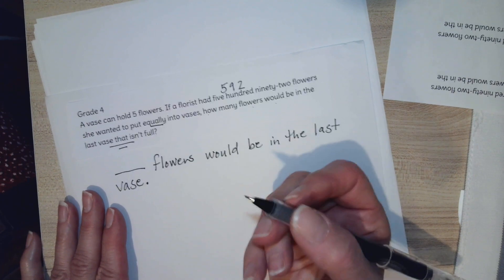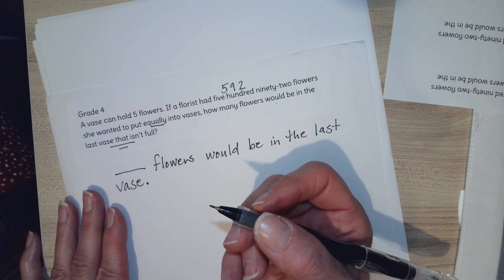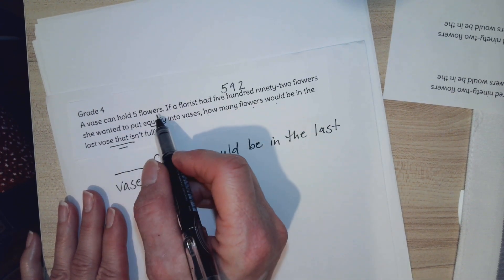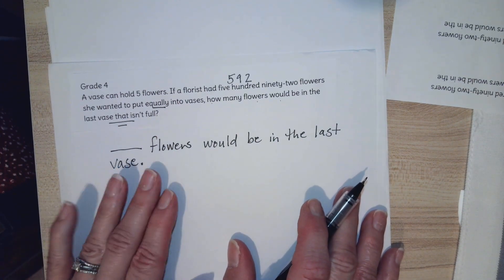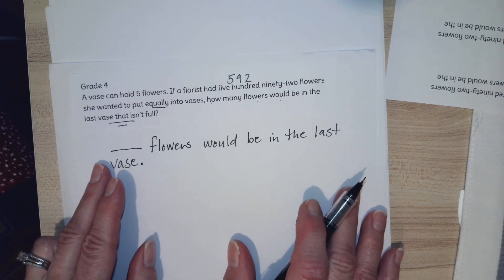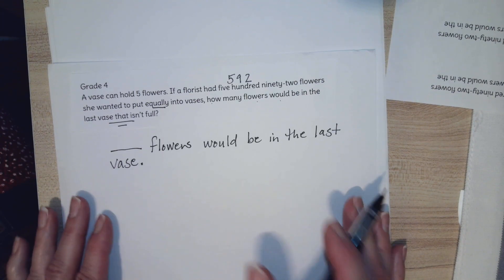Now we know this answer is going to have to be less than 5 because they're saying that a vase can hold 5 flowers. So I'm thinking about what I already know so that when I get done, if I have a number larger than 5, I know I did something wrong or didn't answer the question correctly.